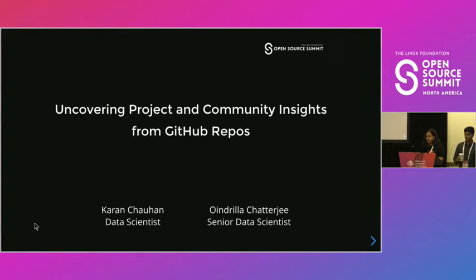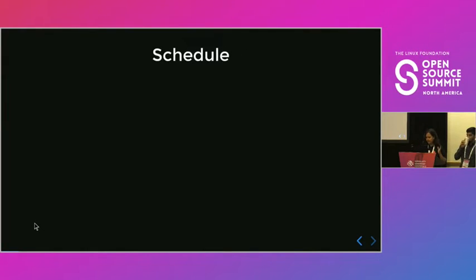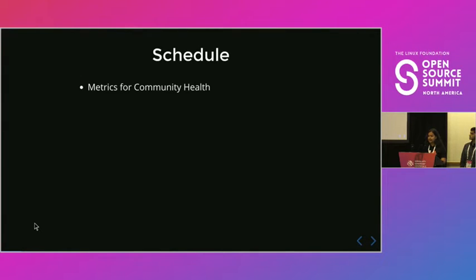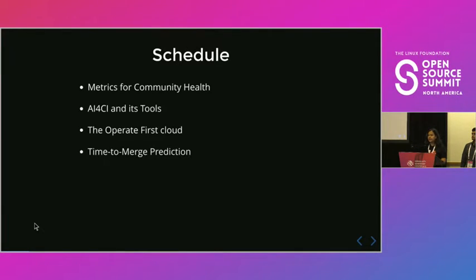Before we move on, let's give you a quick overview of what we're going to cover today. We'll start by introducing what project metrics are and how they can support community health. We'll then introduce our project AI for CI, give a brief introduction of the Operate First Cloud which we use as part of this project, and give you an idea of our time-to-merge prediction tool and the ML workflow we followed. We'll then go over next steps and how you can engage.